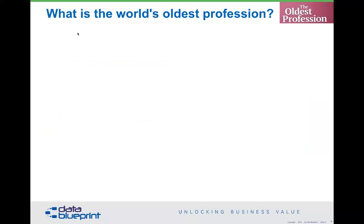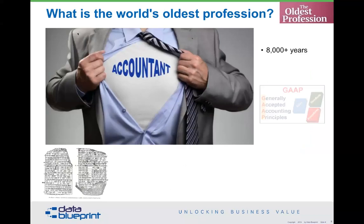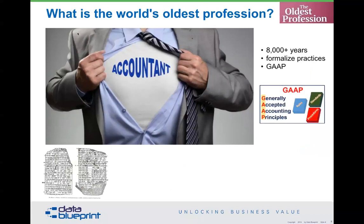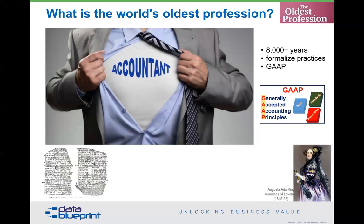What is the world's oldest profession? The answer is accounting. I can make that joke because I'm married to an accountant. Accounting has literally had 8,000 years to get its act together, and it has its act together pretty well. There are things called generally accepted accounting principles. If you are following GAAP, you know you're following a certain way of doing things. About 20% of companies in the United States do not follow GAAP, and the first question anybody asks is: why not?